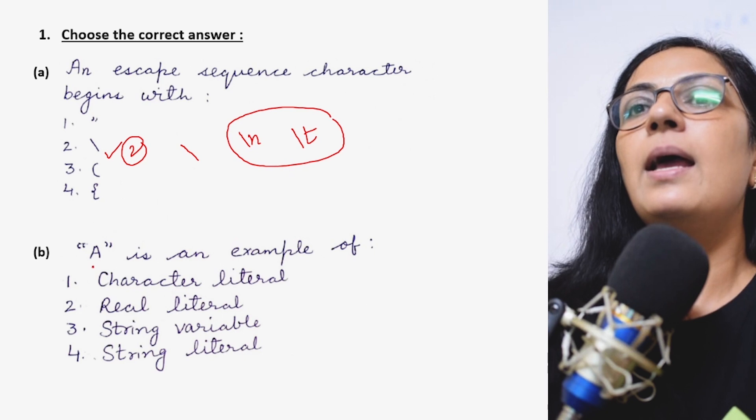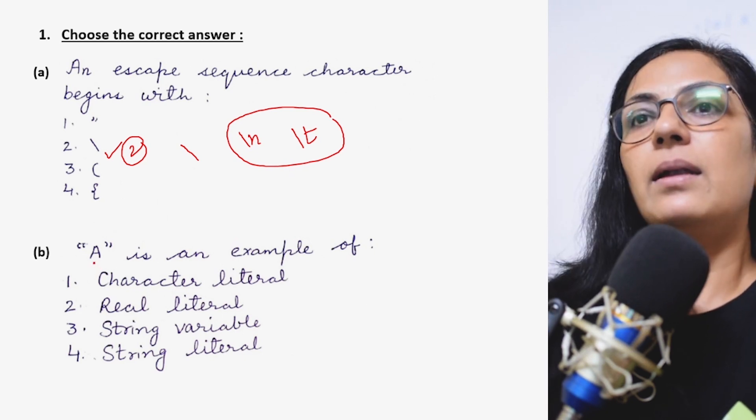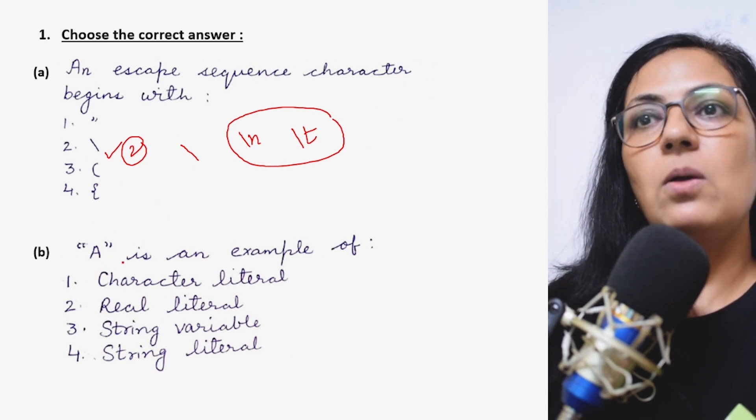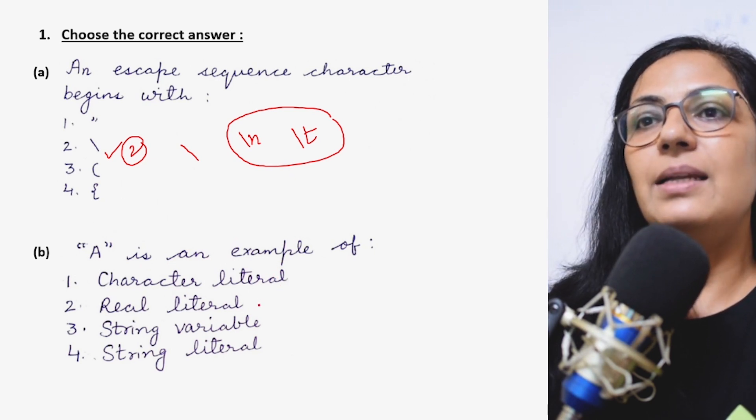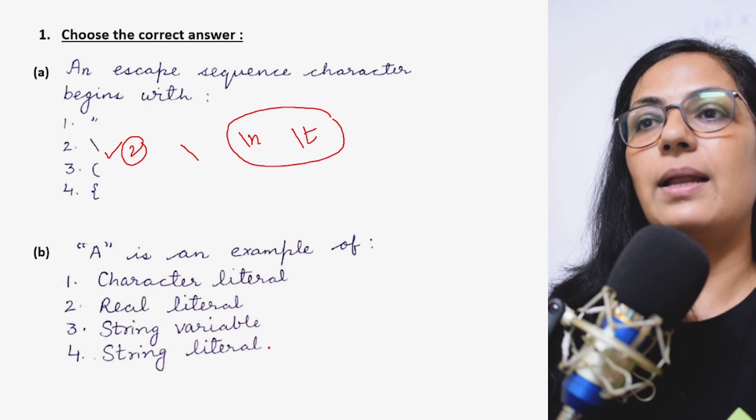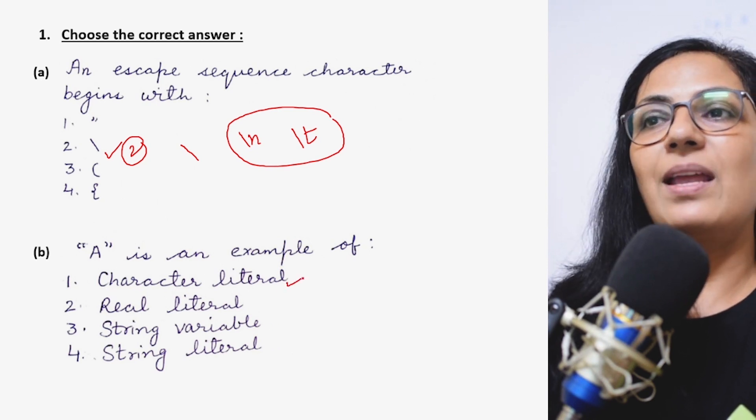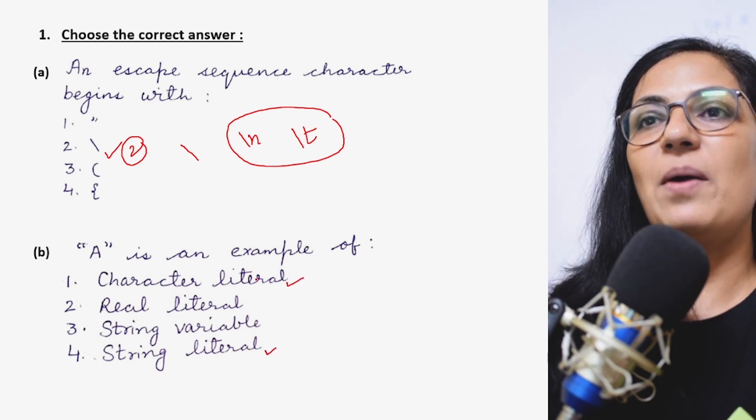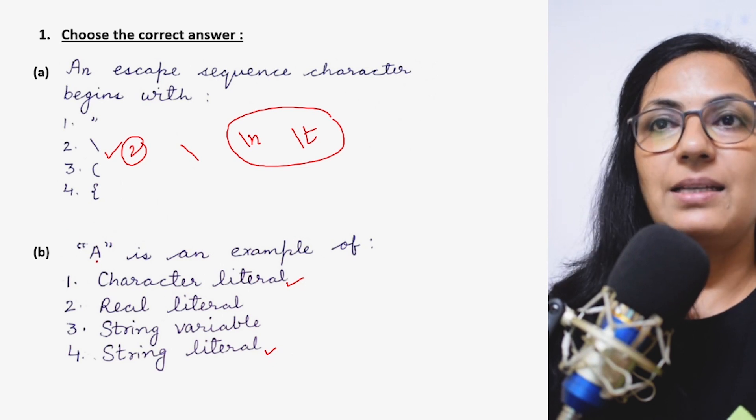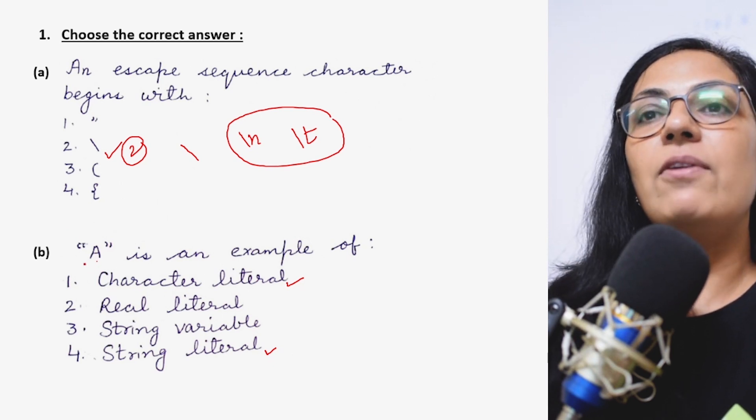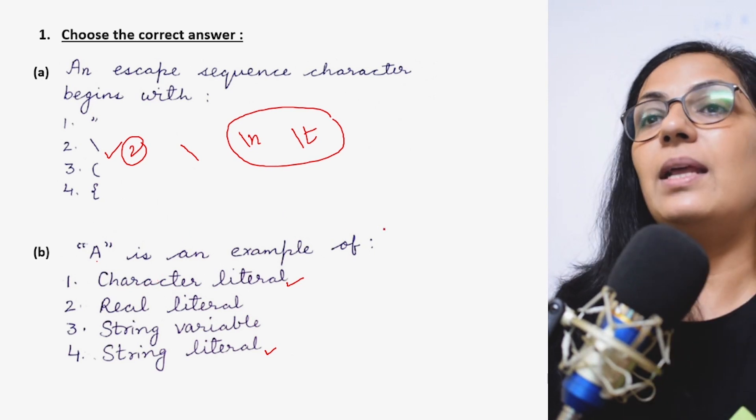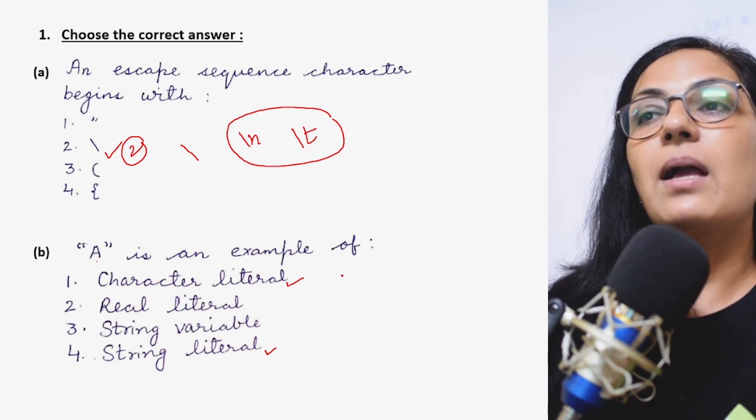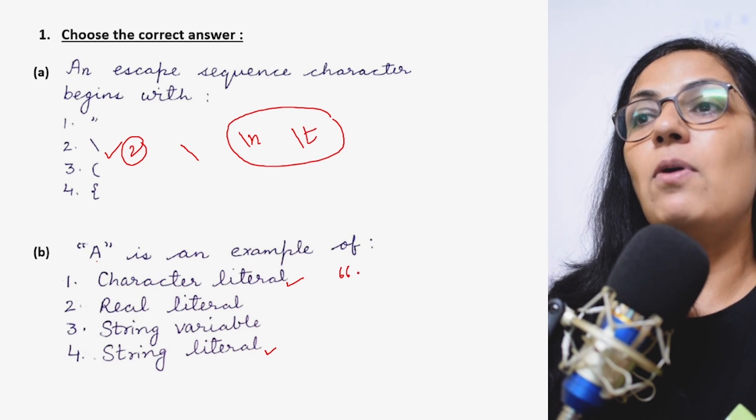The next question is: Double quotes a closing quote is an example of the options are character literal, real literal, string literal, string variable. I think you are getting confused between these two options. A single character is there, but whenever we are writing any single character also within double quotes, it becomes string.